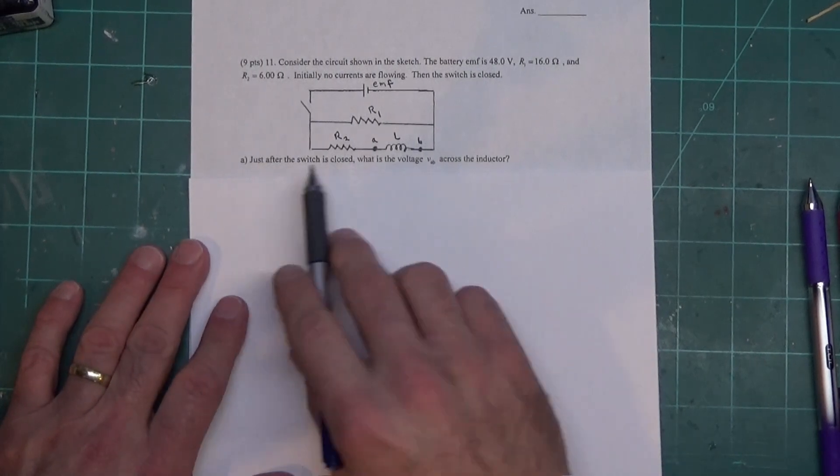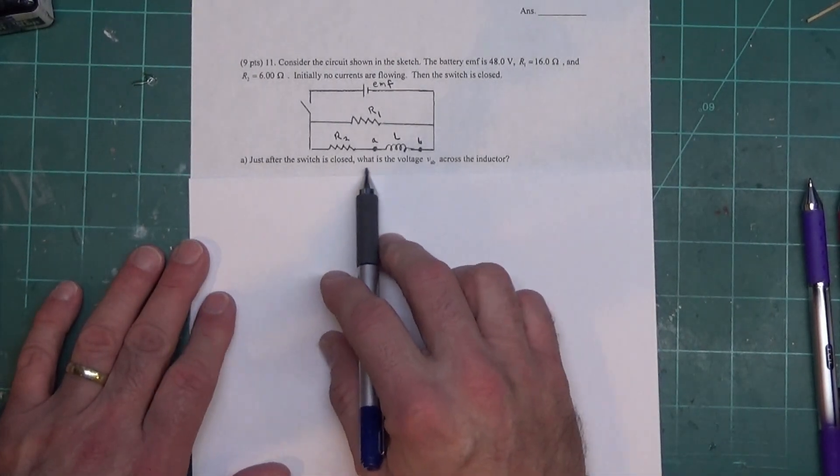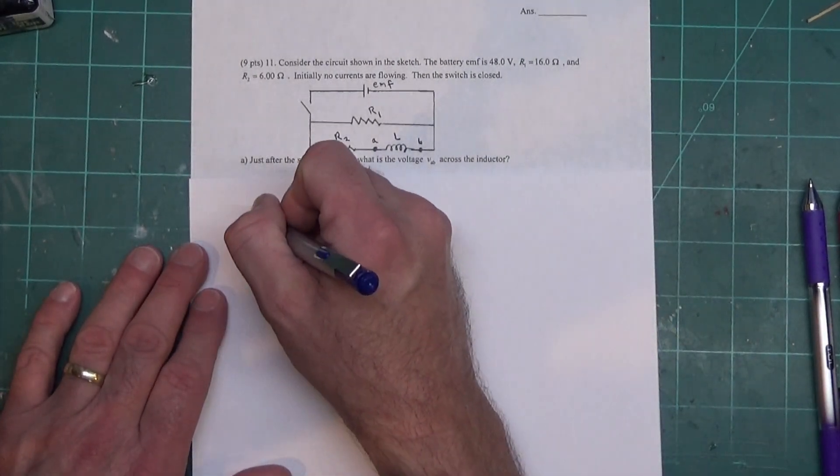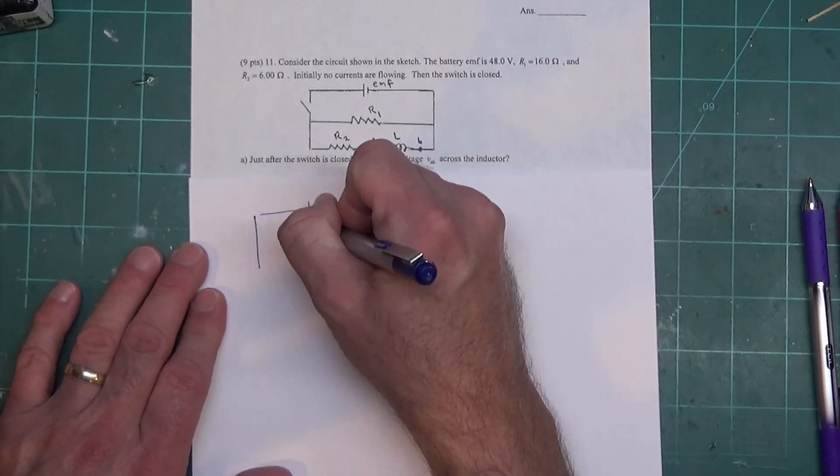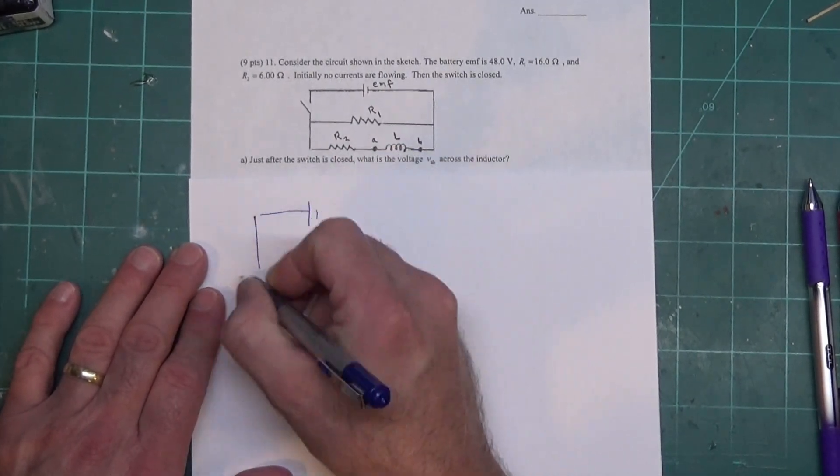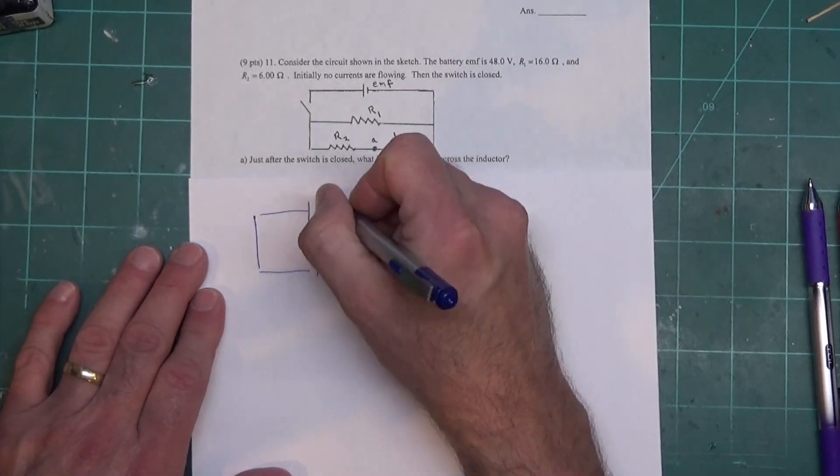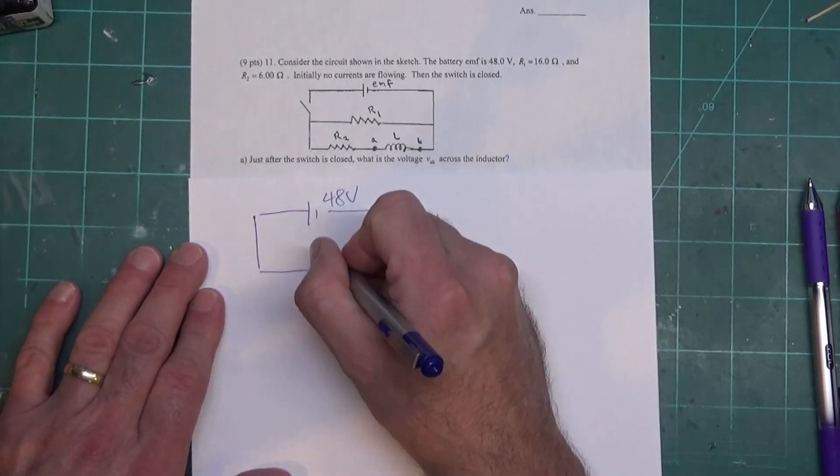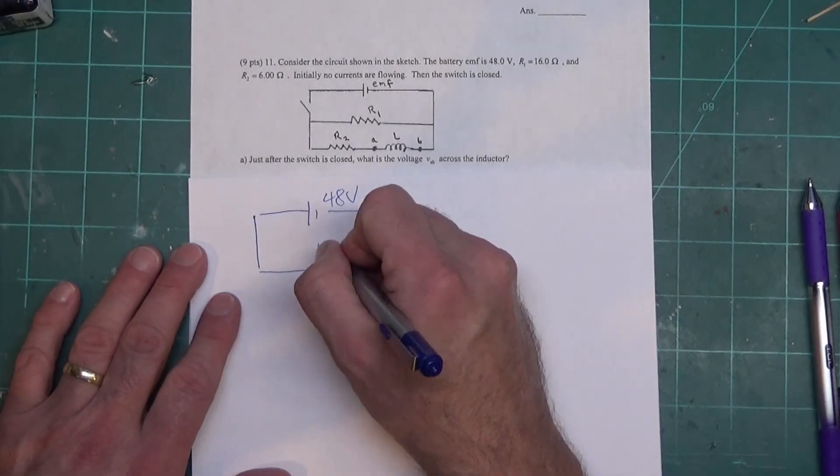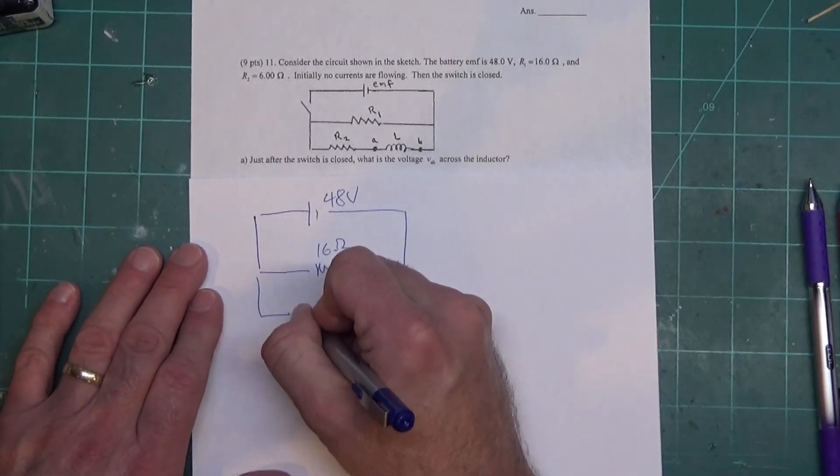All right, so now let's start talking about part A. When the switch is closed, what's the voltage across the inductor? So when the switch is closed we have the battery up here, we have resistor one, and if you can read the problem that says this is a 48 volt battery.